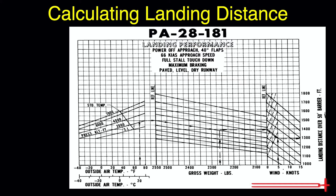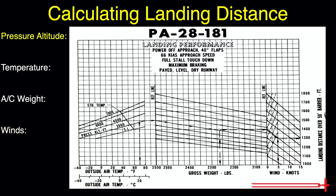We need to know four things before we can find our expected landing distance using these charts: pressure altitude, temperature, aircraft weight, and winds. Our pressure altitude for this example will be 3,300 feet. I've included a link in the description to a video covering how to calculate pressure altitude. Temperature today is 29 degrees Celsius based on the METAR. Aircraft weight is found during our weight and balance computations — for today's example we've got a 2,300-pound plane.